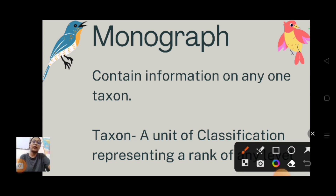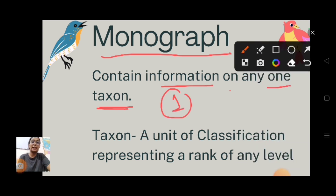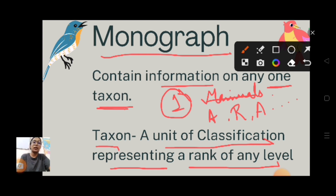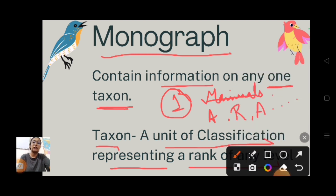What is a monograph? A monograph is a taxonomical aid which contains information on any one taxon. A taxon is a unit of classification representing a rank of any level. For example, considering one taxon like mammals, or amphibians, or reptiles, or aves - a monograph covers only one particular taxon.